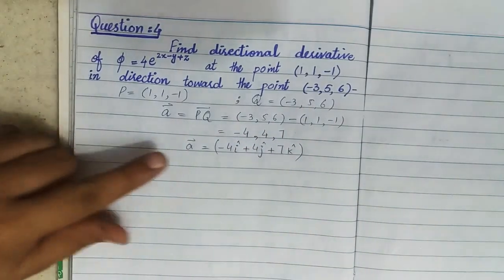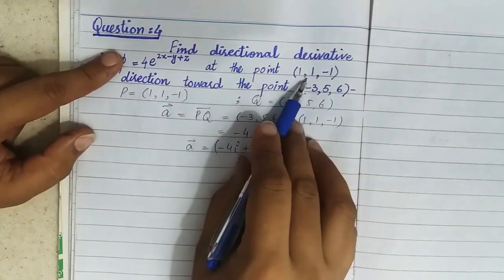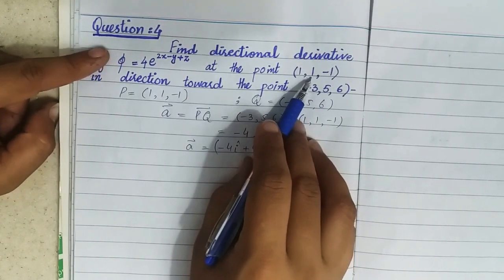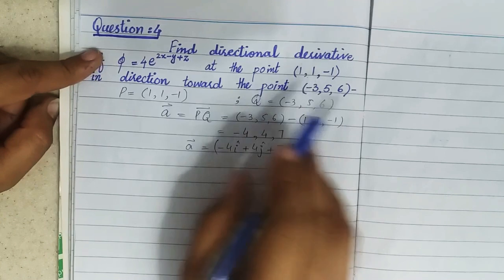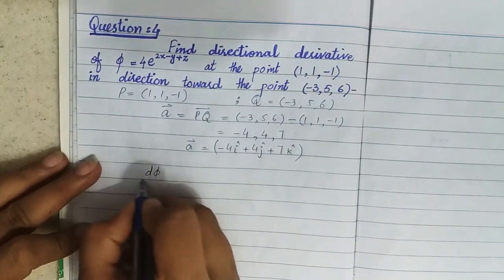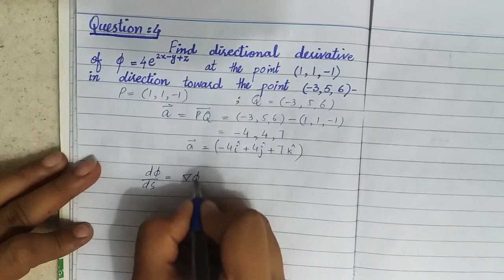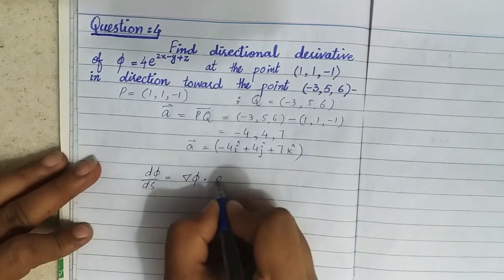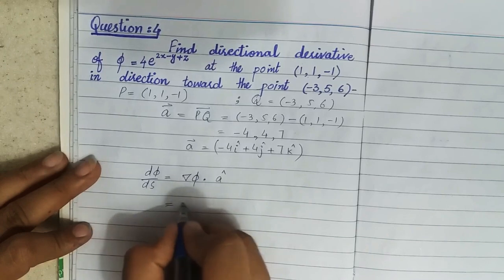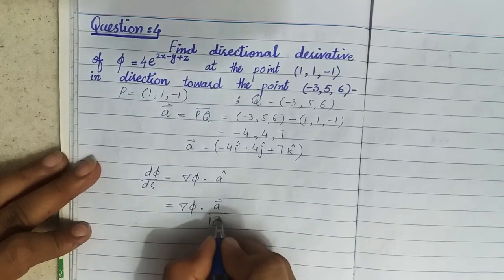We have found the vector. This is the function and this is the point. Now we will apply the formula of directional derivative, which is equal to del phi dot the unit vector, that is equal to the vector over its magnitude.